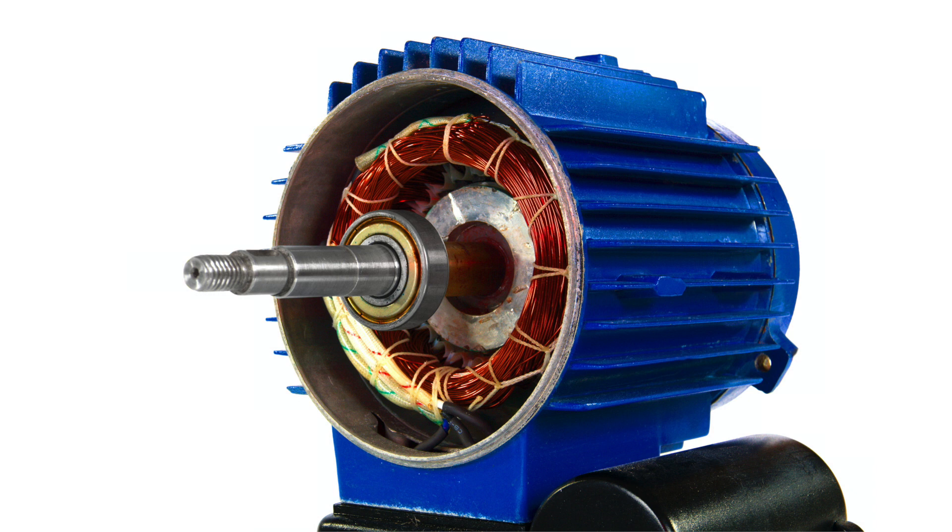The rotating magnetic field induces a voltage in the rotor windings, which causes currents to flow in the rotor bars. The rotor currents produce their own magnetic field, and this interacts with the stator magnetic field to produce a torque.